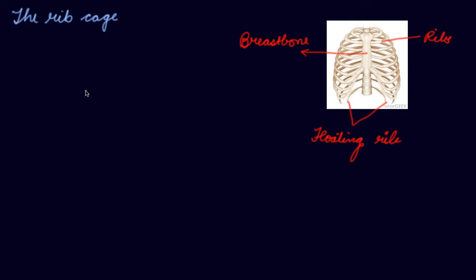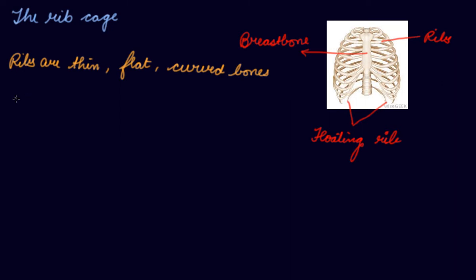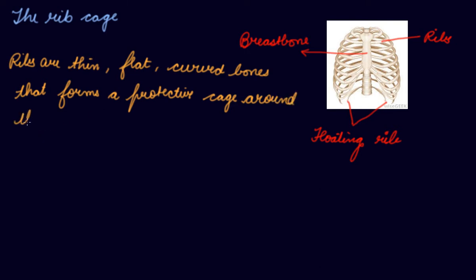Take a deep breath and feel the bones on your chest. Can you feel flat curved bones? These are your ribs. The ribs are thin, flat, curved bones that form a protective cage around the organs — like your heart and lungs, which are protected by this rib cage.